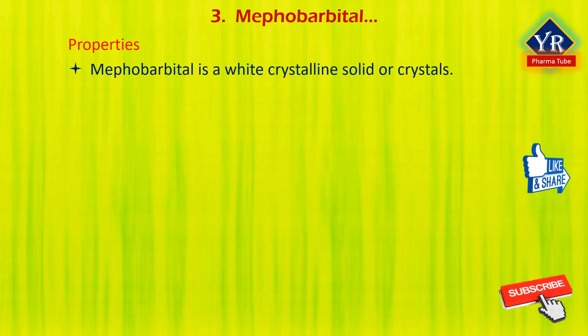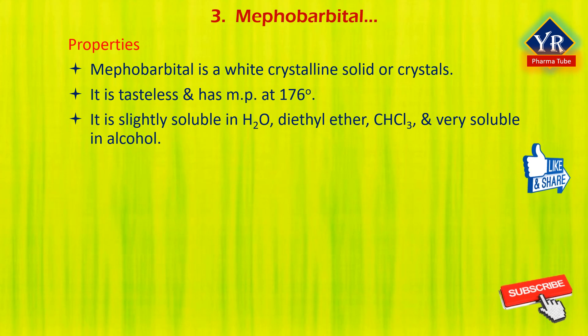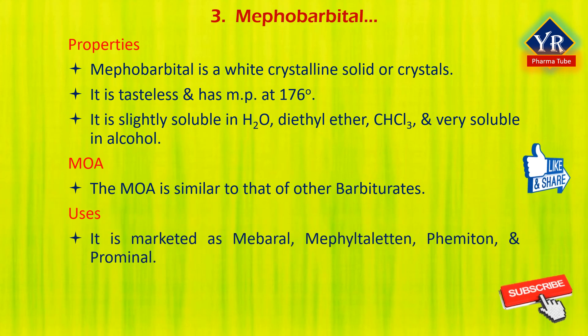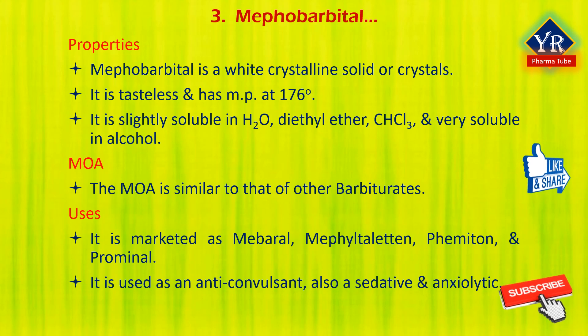Mephobarbital is a white crystalline solid; it is tasteless and has a melting point of 176 degrees centigrade. It is slightly soluble in water, diethyl ether, and chloroform, and very soluble in alcohol. Its mechanism of action is similar to that of other barbiturates. It is marketed under brand names such as Mebaral, Methyltaletin, Femitone, and Prominal. It is primarily used as an anticonvulsant but also as a sedative and anxiolytic.